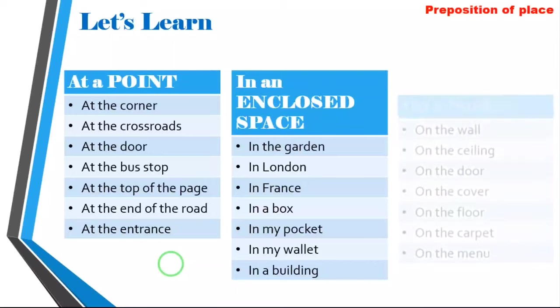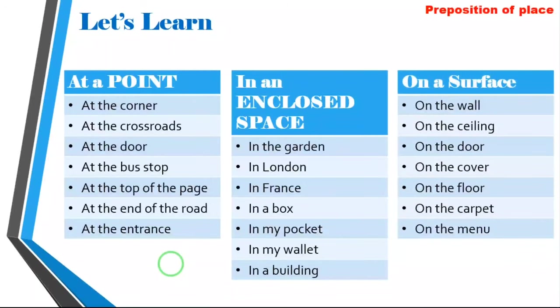Now let's check the third one, which is 'on' — on a surface. Examples: on the wall, on the ceiling, on the door, on the cover, on the floor, on the carpet, and on the menu. Please read it. On the wall, on the ceiling, on the door, on the cover, on the floor, on the carpet, on the menu. Very good.